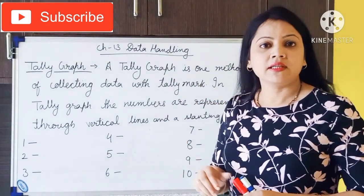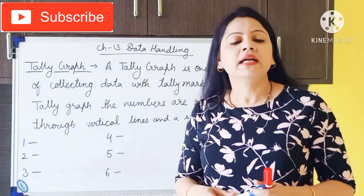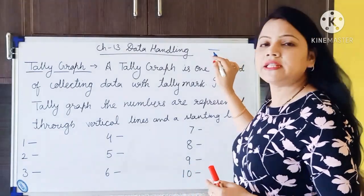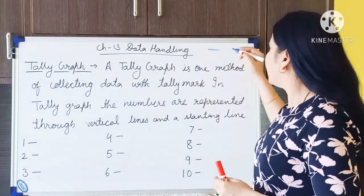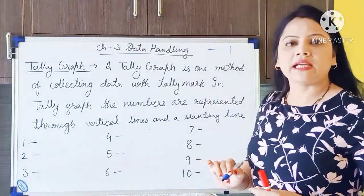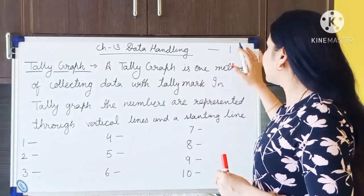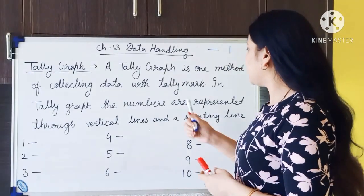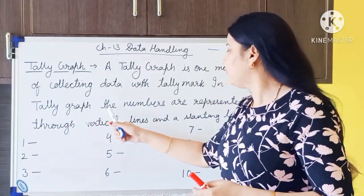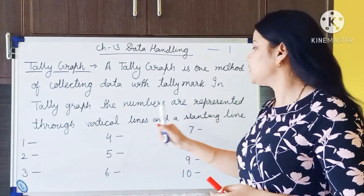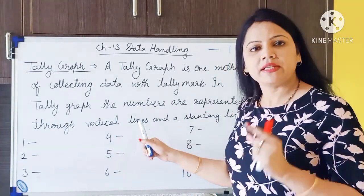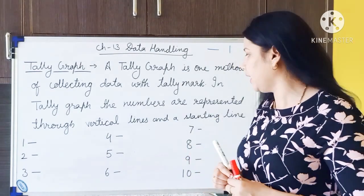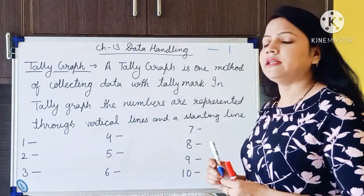With tally marks. What are tally marks? Tally marks are represented by vertical dashes. In a tally graph, the numbers are represented through small vertical lines, basically called vertical dashes, and a slanting line.